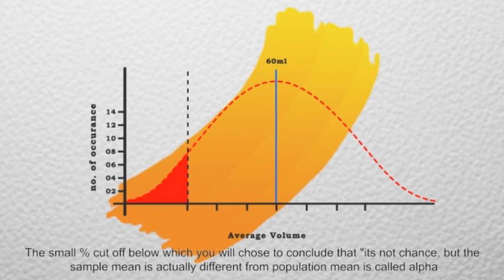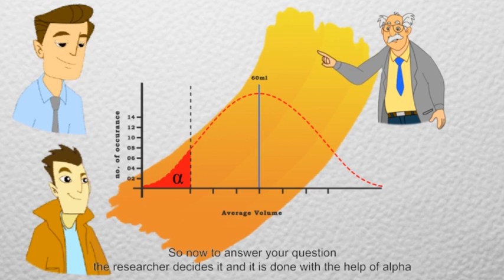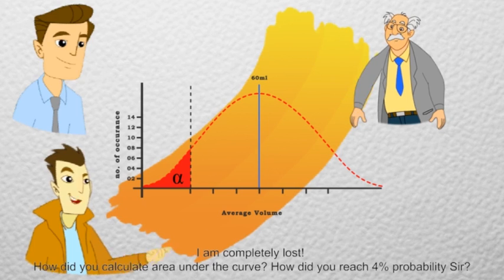The small percent cutoff below which you will choose to conclude that it's not chance but that sample mean is actually different from the population mean is called alpha. So now to answer your question, the researcher decides it and it is done with the help of alpha.